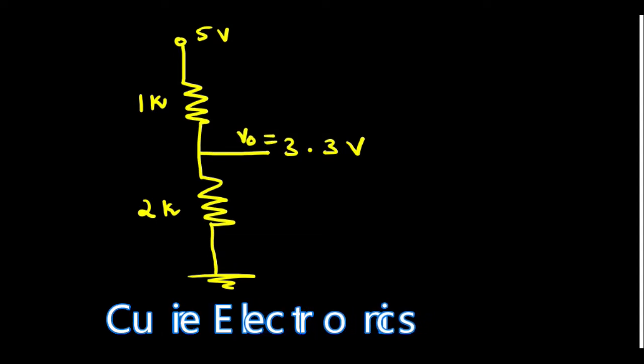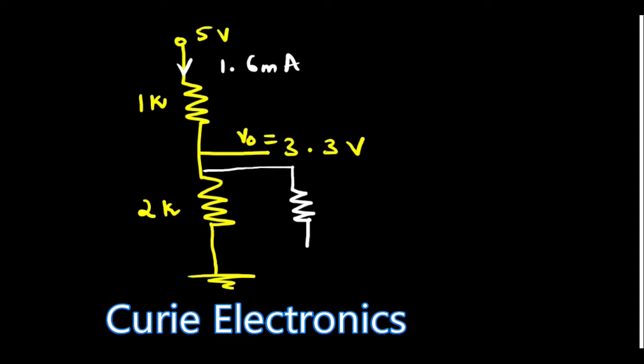But this is not sufficient. Why? What is the current flowing through this circuit in this condition? It is going to be 1.6 mA. Let us assume that my load is a 470 ohm resistor. Now, what happens if I connect 470 ohm resistor? This current increases. This 1.6 mA increases because it is a parallel resistor, increases to 3.6 mA.